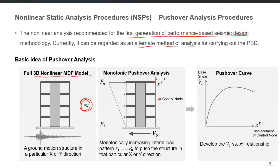We represent the actual dynamic loading applied to our structural model as a static loading having some pattern. The forces f1 to fn are the story forces applied to push the building in the horizontal direction. That push is not a one-step method — the building is pushed in a monotonic manner, starting with very low amplitude forces and incrementally increasing the amplitude step by step.